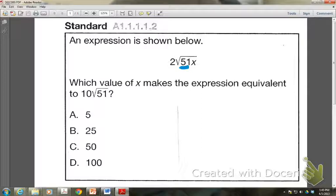Then I would look at these other numbers down here and say, if I put 5 in there for x, 5 is also a prime number. It cannot be broken down into factors. So that leaves me with 25, 50, and 100.